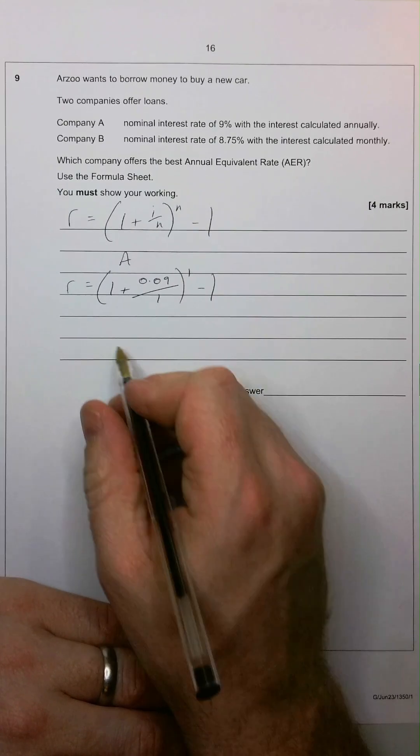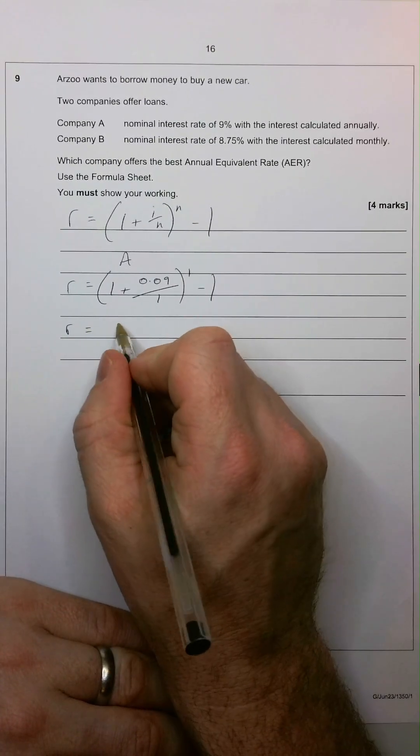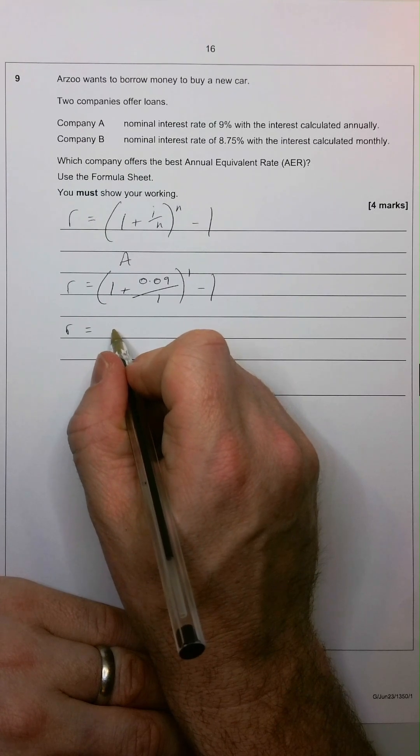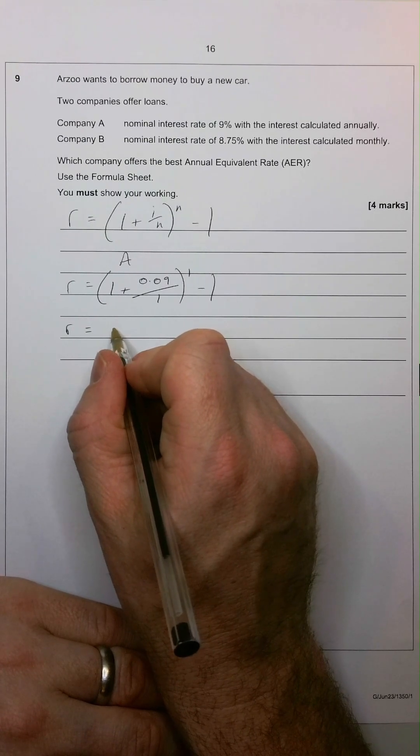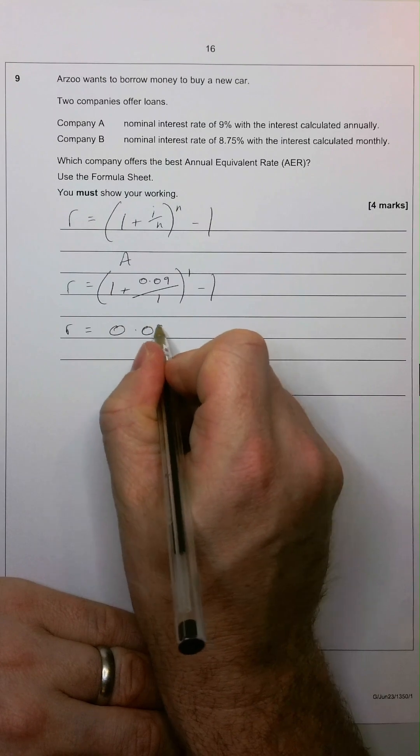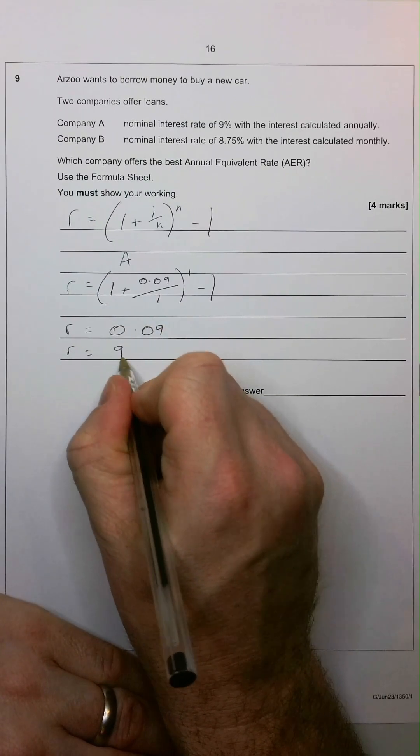If we put that into our calculator, we'll get an interest rate, or annual equivalent rate, AER, of 0.09, or of course, 9%.